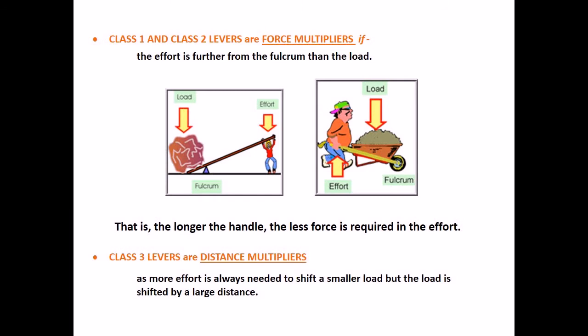Class 1 and class 2 levers are force multipliers if the effort is further from the fulcrum than the load. That is, the longer the handle, the less force is required in the effort. Class 3 levers are distance multipliers as more effort is always needed to shift a smaller load but the load is shifted by a large distance.